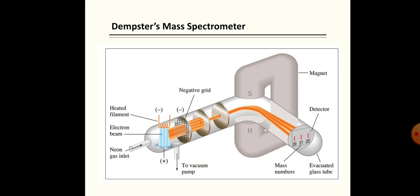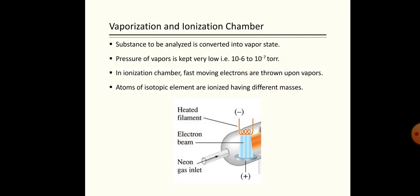Now we will discuss the working of the Dempster mass spectrometer. Each type of spectrometer starts from the vaporization chamber. The substance to be analyzed is converted into vapor state, and the pressure of vapors is kept low because at low pressure, ionization of the substance takes place easily.